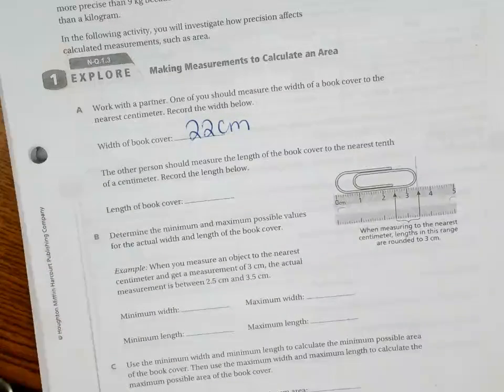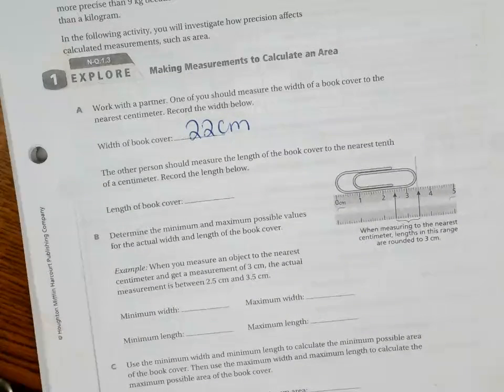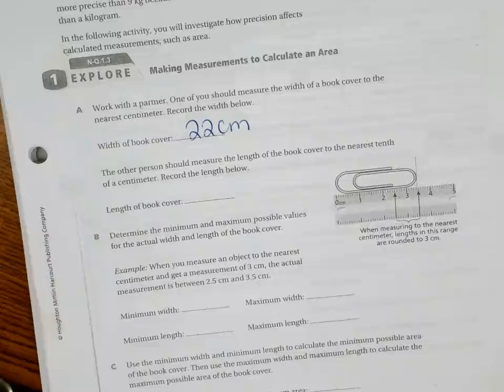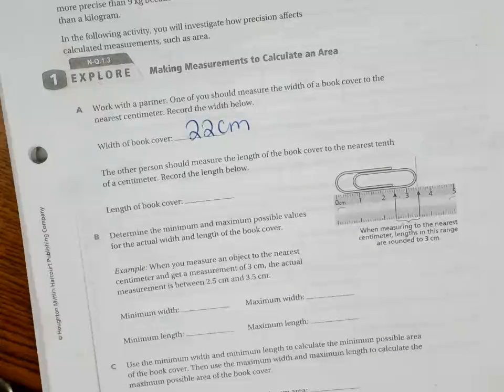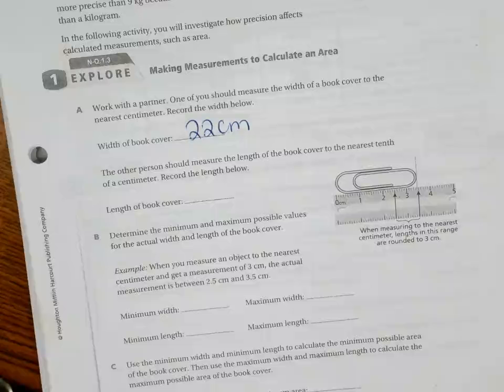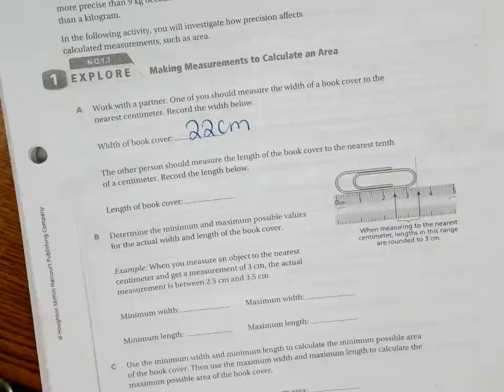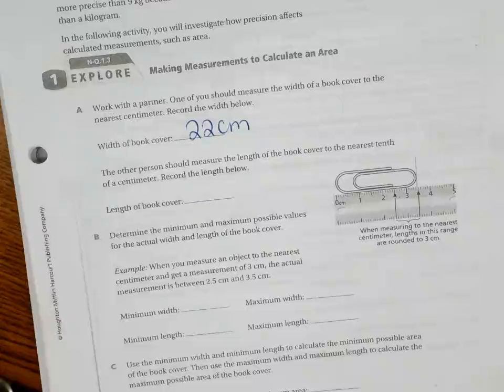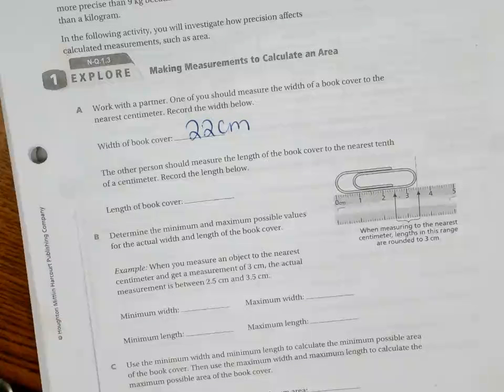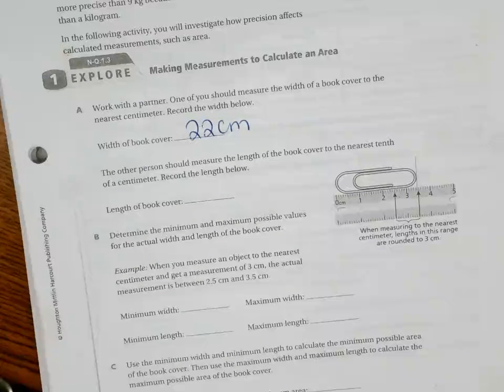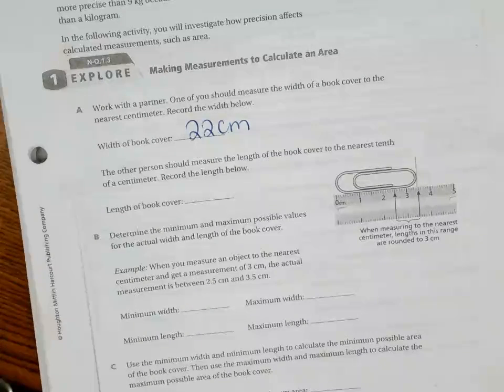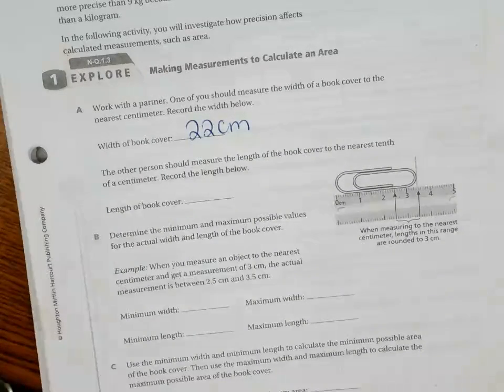What about the length of your book to the nearest tenth of a centimeter? I got like 28 and 28.3. Let me type. Twenty-eight point four.